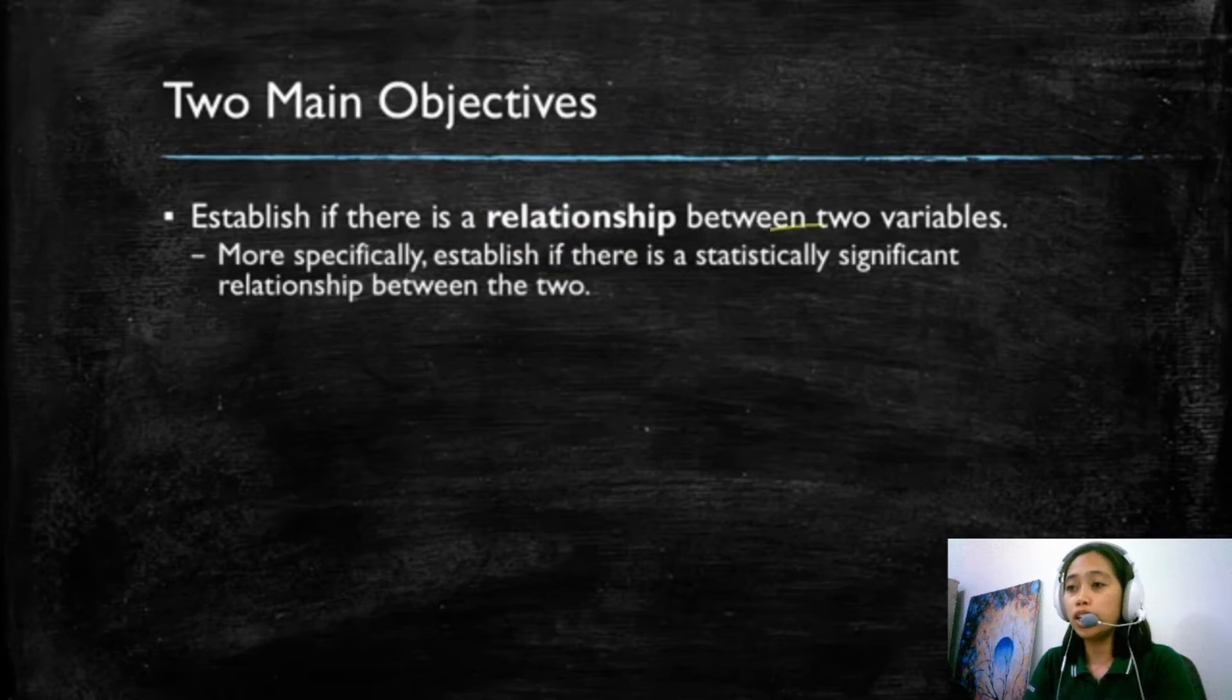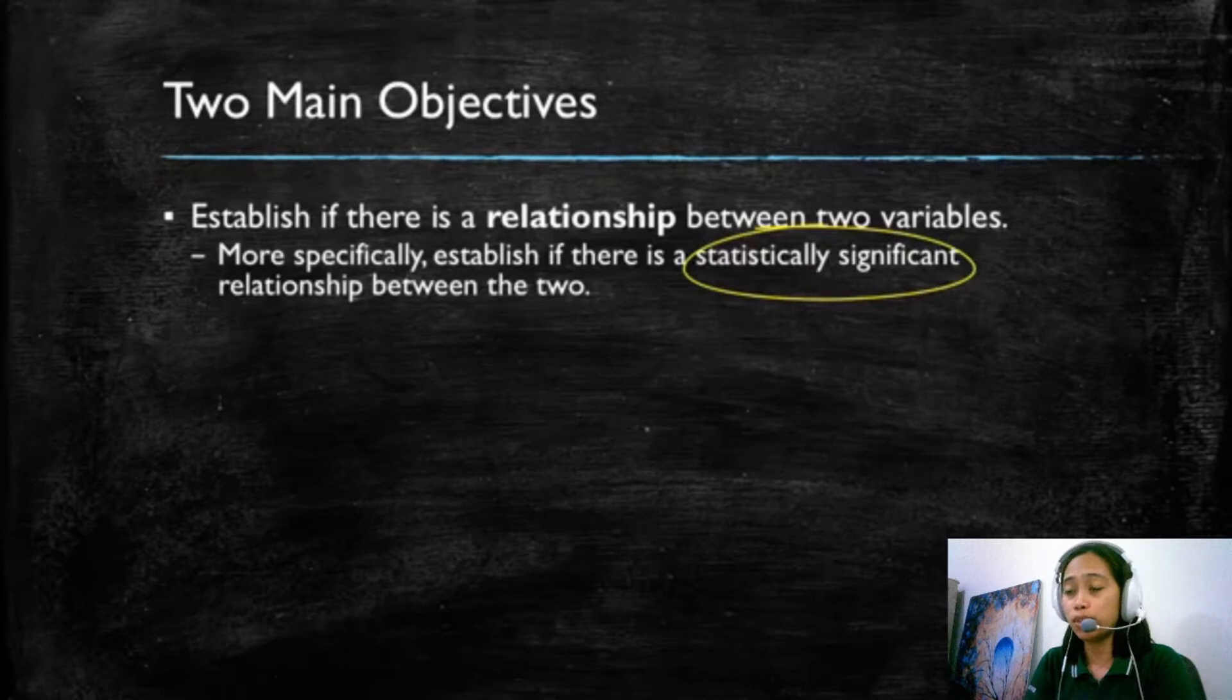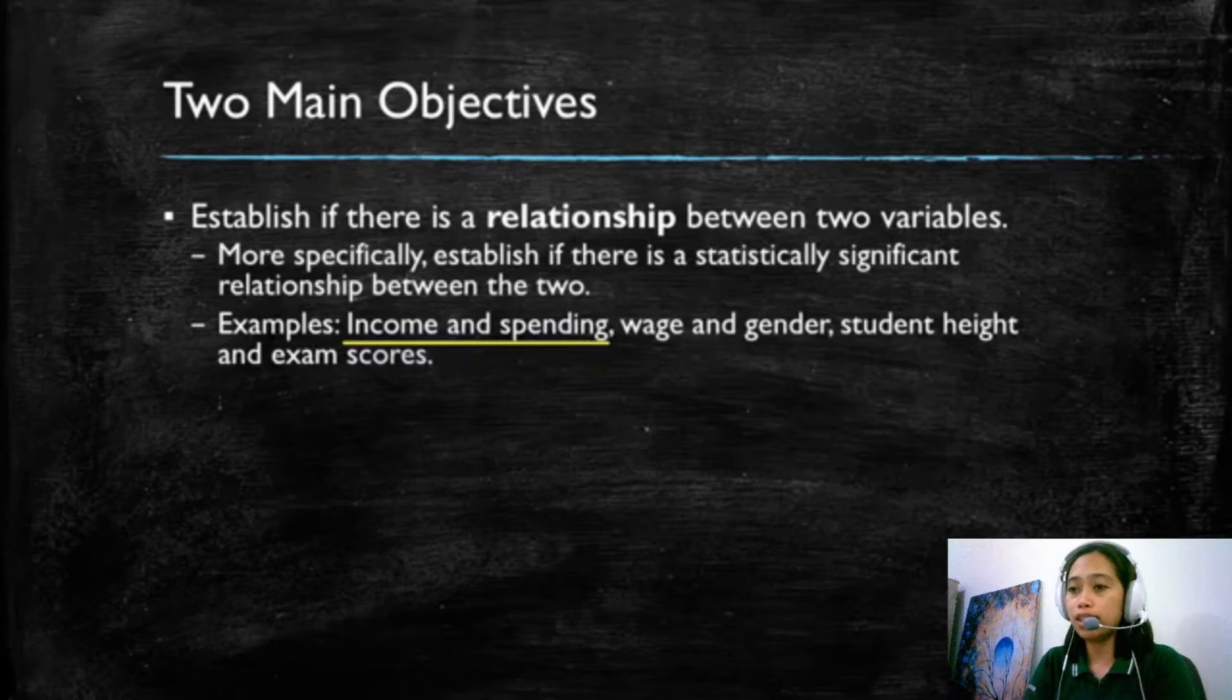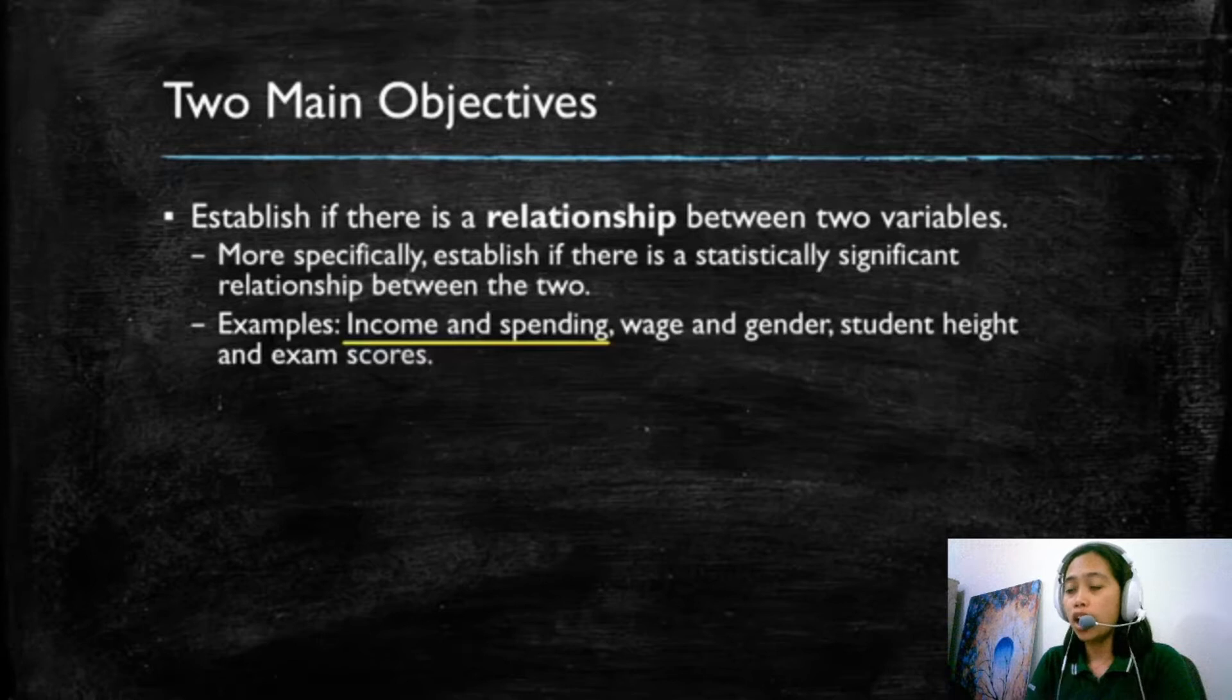More specifically, we're going to be talking about statistically significant relationships between the two variables, but we will get back to this later. Let's talk about some examples. On average, we expect that people or families that earn higher income will generally spend more on a given product. In this case, we're talking about a positive relationship between income and spending.